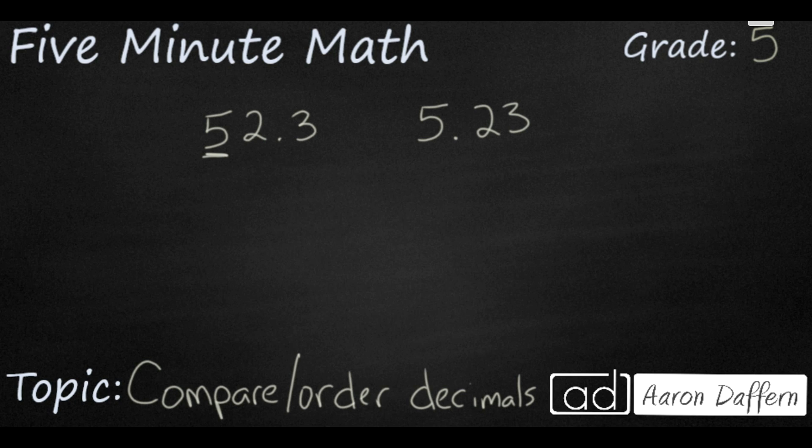So in this case the largest place value is the tenths place. We have a 5 in the tenths place and the number on the right doesn't even go to the tenths place. It would be 05 if we needed a digit in the tenths place and 5 is going to be larger than 0, and so 52.3 is going to be greater than 5.23. It doesn't really matter if it's the same digits. You're always looking at the largest place value.